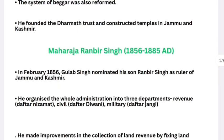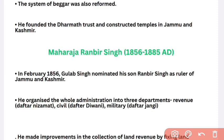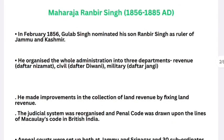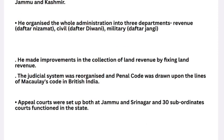Maharaja Rambir Singh created three departments: the Revenue Department called the Daftar of Nizamat, the Civil Department called the Daftar, and the Military Department called the Daftar of the Generalist. He made improvements in the collection of land revenue by fixing uniform land revenue. The judicial system was reorganized and a penal code was drawn up on the lines of Macaulay's Code in British India.